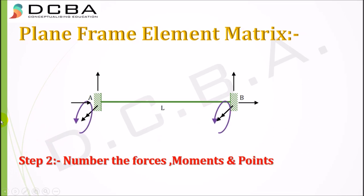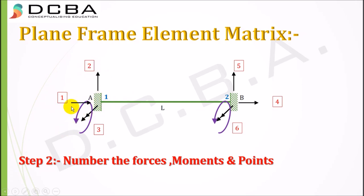Step 2 is to number the forces, moments, and points. This step is very important because the whole stiffness matrix depends on how you number the forces and elements. We start from horizontal force, then vertical force, then the moment — numbered 1, 2, 3 at joint A (point 1) and 4, 5, 6 at joint B (point 2).